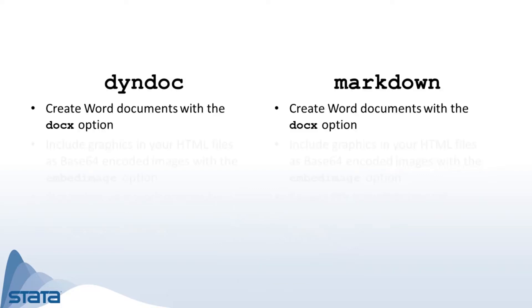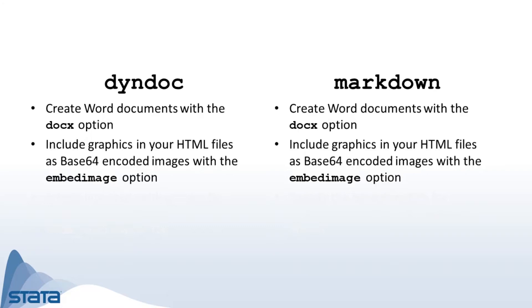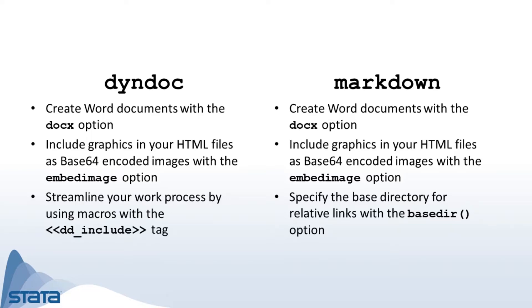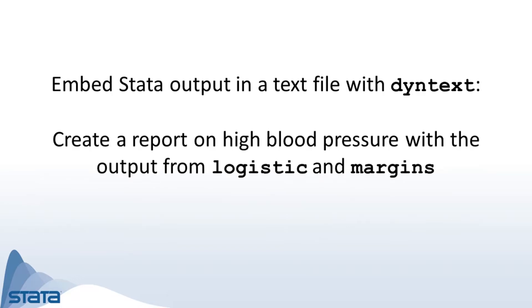When creating HTML and Word documents you have a lot of flexibility. For example, to create a Word document simply specify the docx option, or if you want to include graphics in your HTML files as base64 encoded images instead of links, just use the embed image option. To use relative links in your text file, simply specify the base directory. With markdown you can streamline your work process by using macros with the dd_include tag.